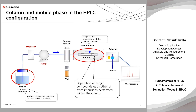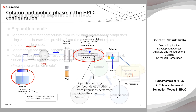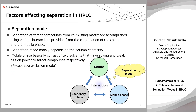In this part, what happens in the column is explained. Multiple compounds in the sample are injected simultaneously. The reason they can be separated is the difference in their moving speed through the column.